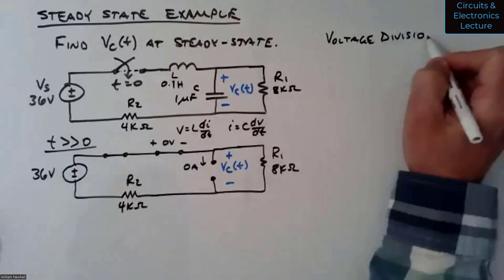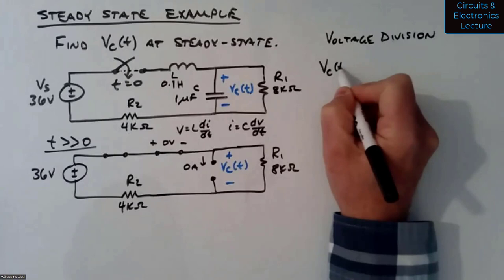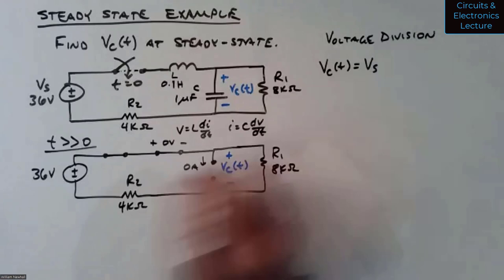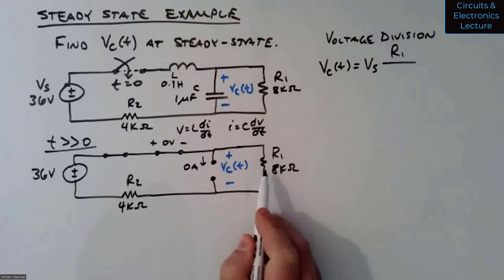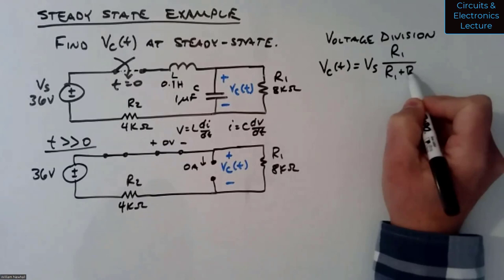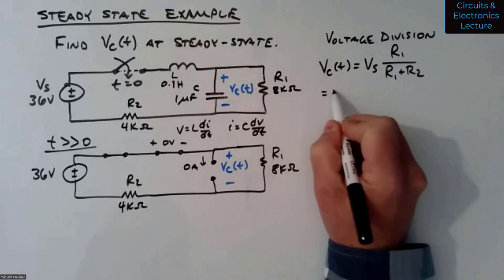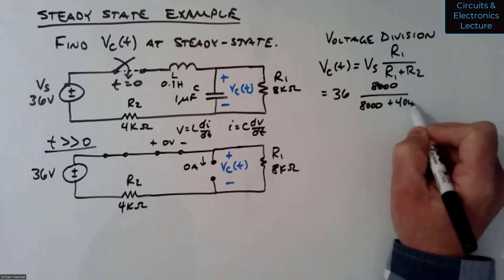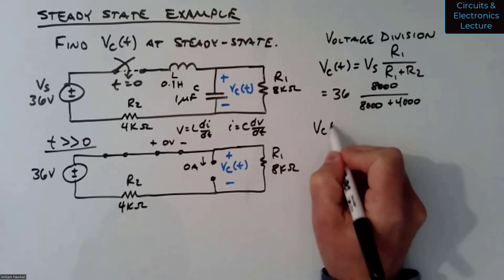So Vc(t) equals the source voltage times R1 divided by the sum of the series resistances. That equals 36 times 8,000 over (8,000 plus 4,000), which equals 24 volts — for t much greater than zero.